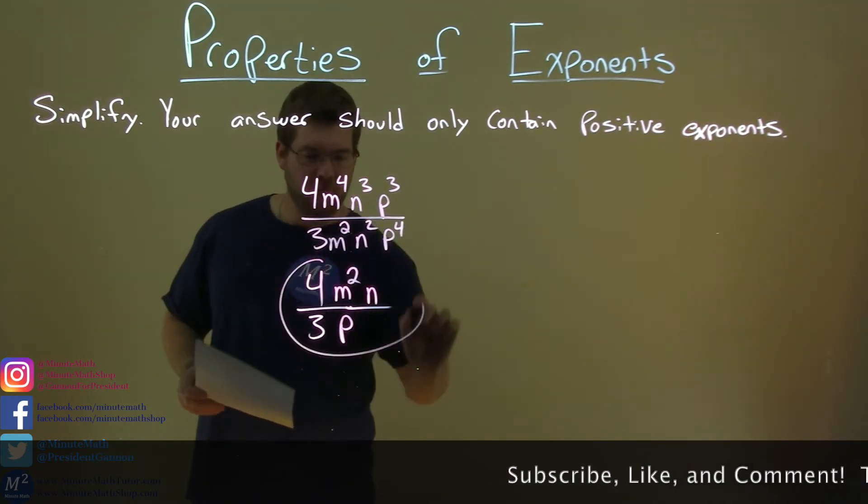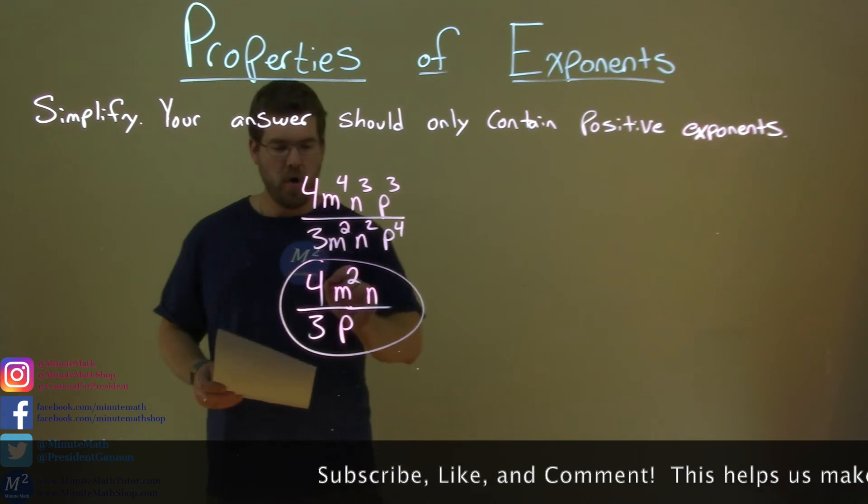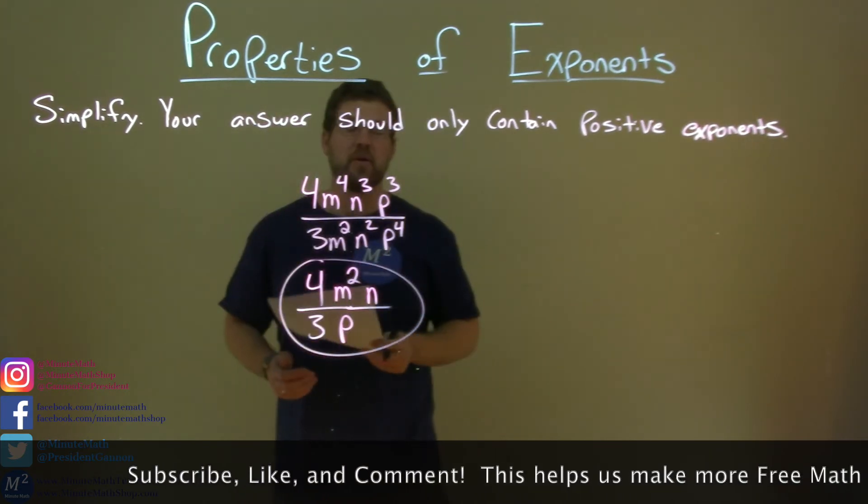Remember, no positive exponents. 4m squared n over 3p, and that is our final answer.